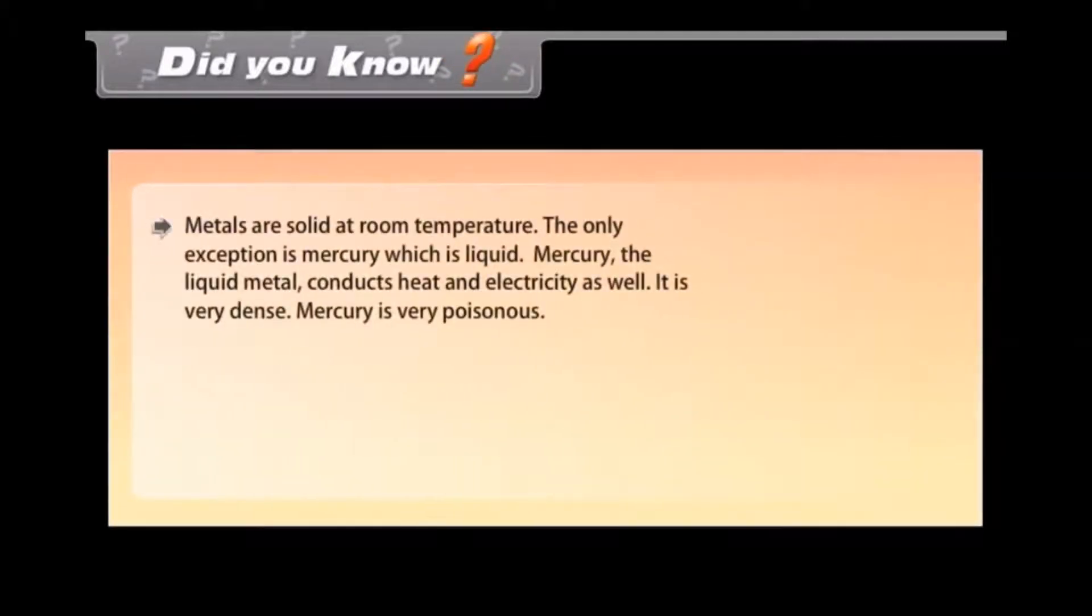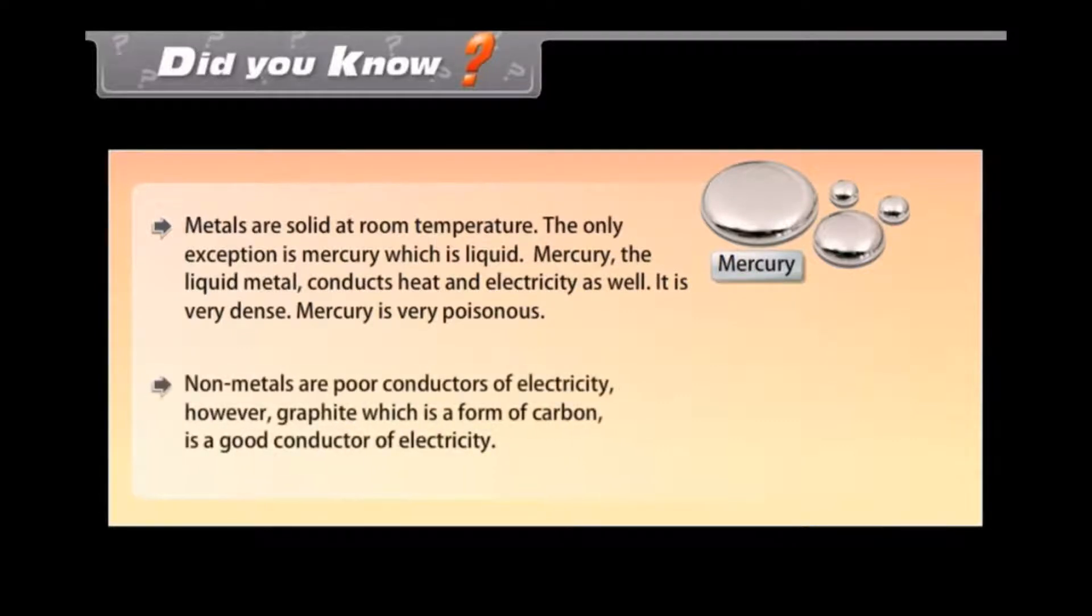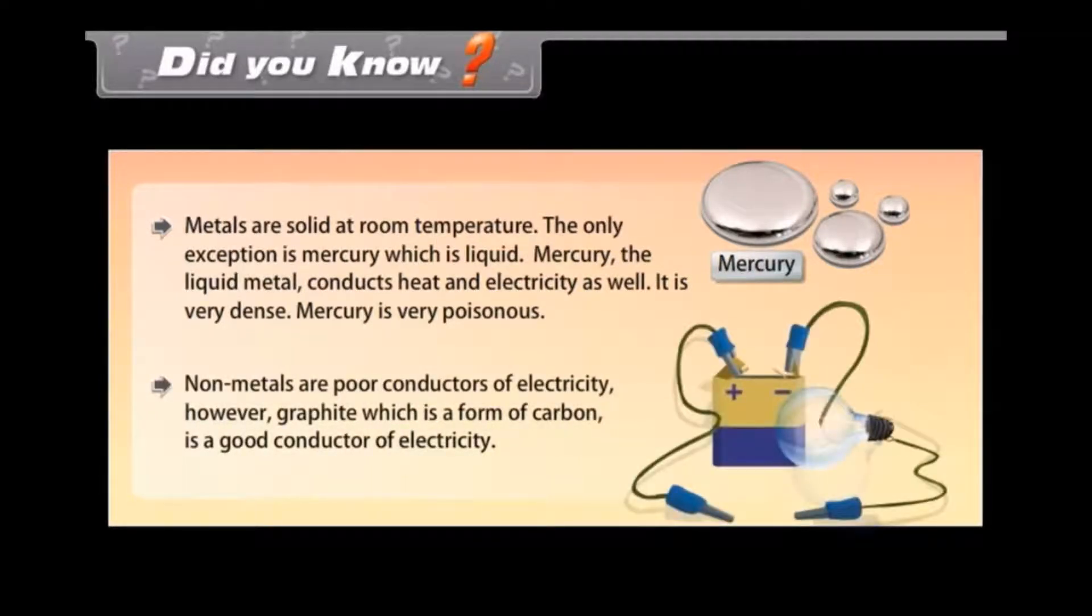Did you know? Metals are solid at room temperature. The only exception is mercury which is liquid. Mercury, the liquid metal, conducts heat and electricity as well. It is very dense. Mercury is very poisonous. Non-metals are poor conductors of electricity. However, graphite, which is a form of carbon, is a good conductor of electricity.